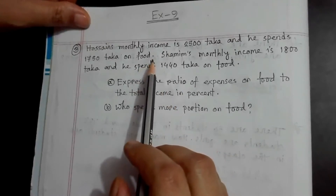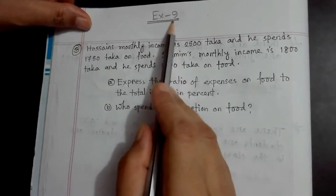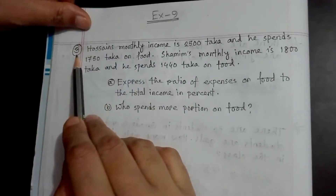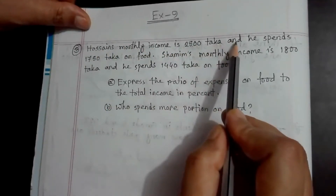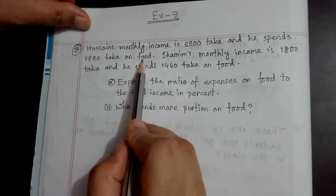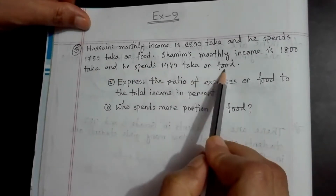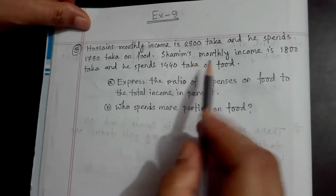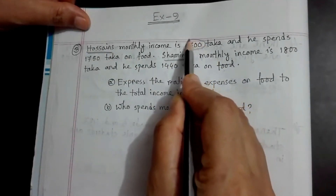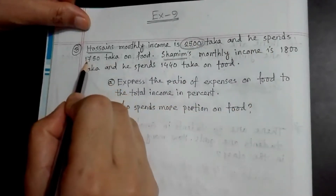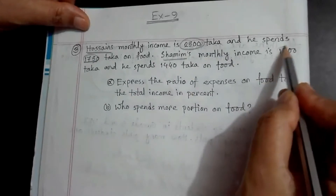Dear students, now we will discuss a creative question from your book, exercise nine, page number, question number three. Hosain's monthly income is 25,000 and he spends 1,750 on food. Shamim's monthly income is 1,800 and he spends 1,440 on food.